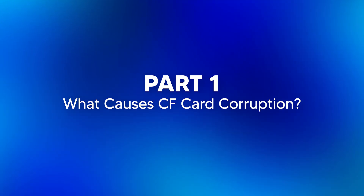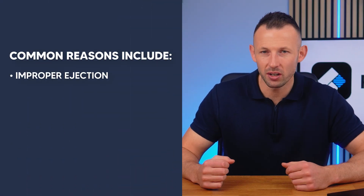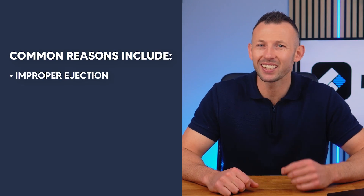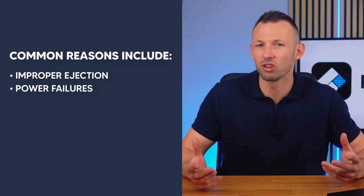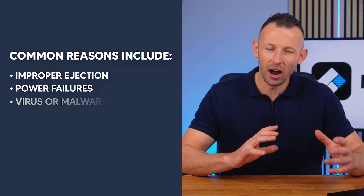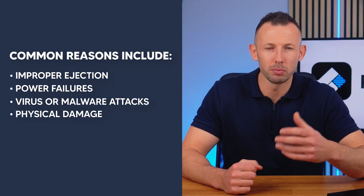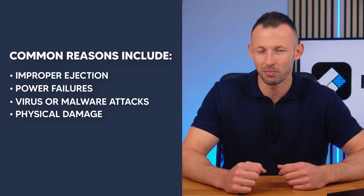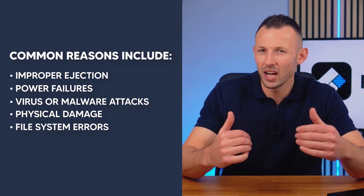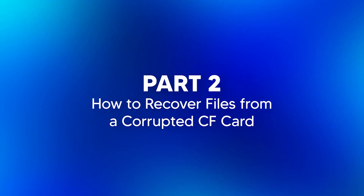Now let's get into it. Part one: what causes CF card corruption? Understanding the root causes can help prevent future issues. Common reasons include improper ejection — removing the card without safely ejecting it — power failures, sudden loss of power during data transfer, virus or malware attacks, physical damage from extreme temperatures or impact, and file system errors from formatting errors or bad sectors. Recognizing these causes is the first step in effective CF card recovery.